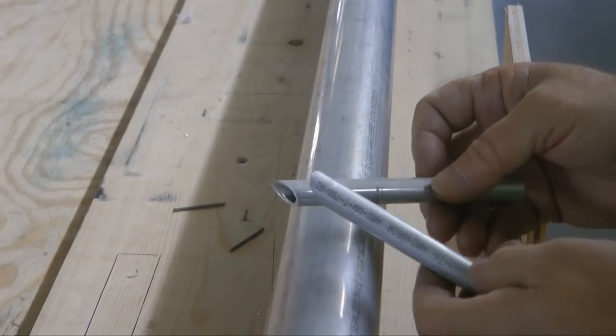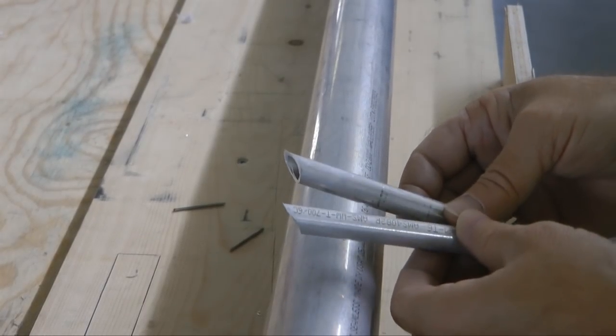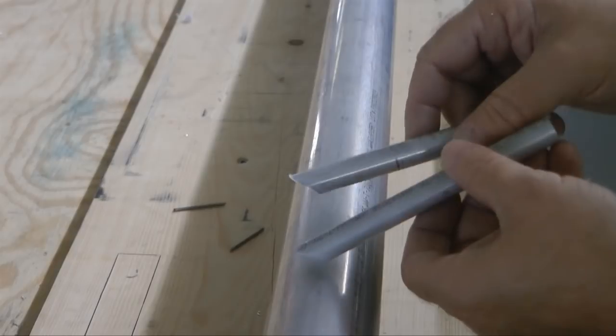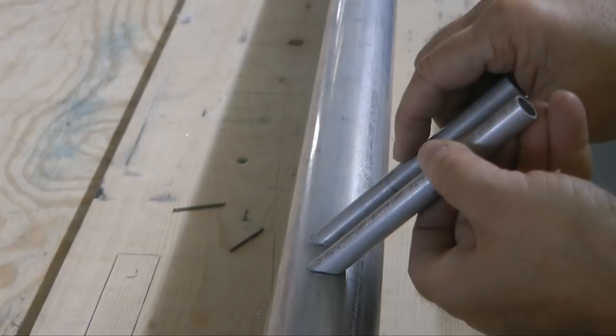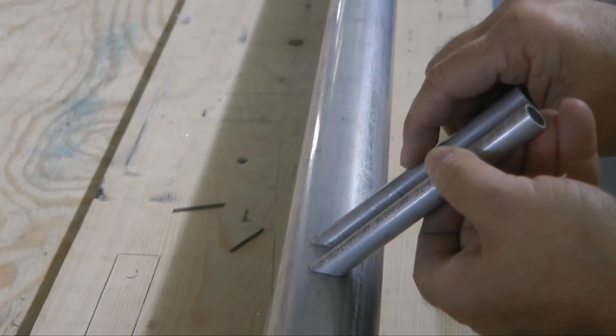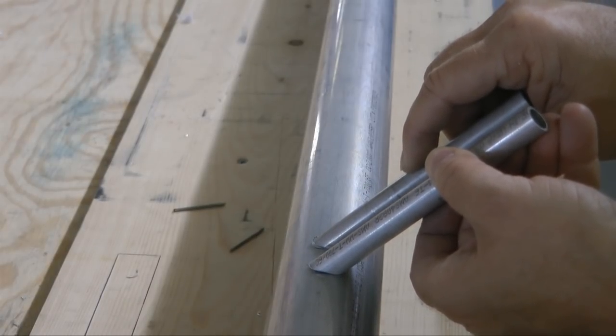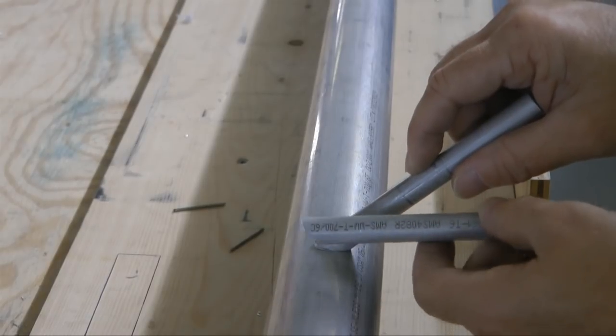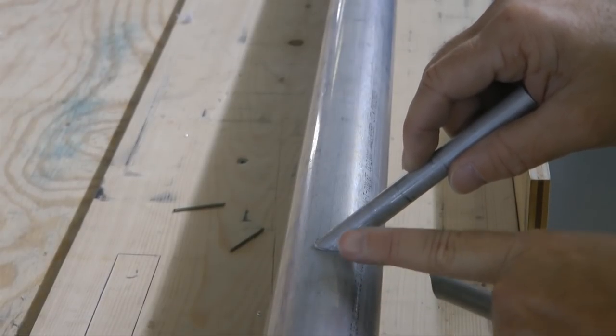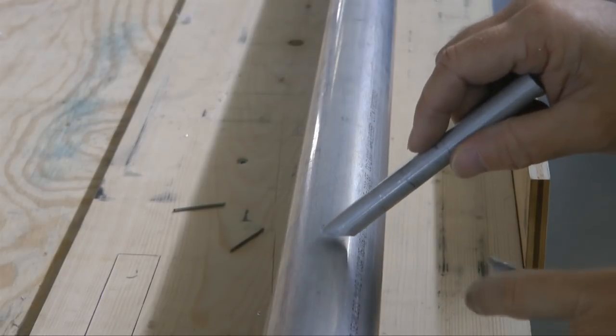So basically we're getting two ribs, two front noses for two ribs from each piece of 10-foot stick. So the only thing left then will be to make the nose end for the rear end for the inch and a half spar, which is a slightly different radius.